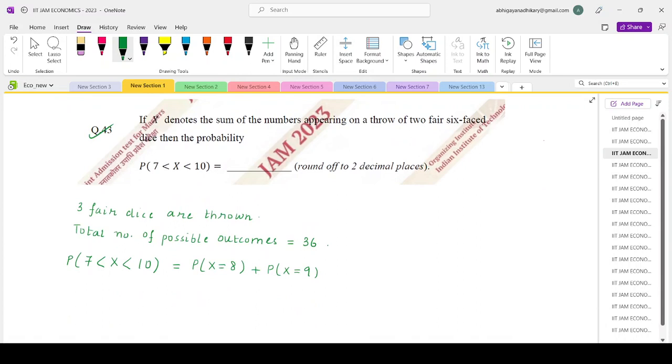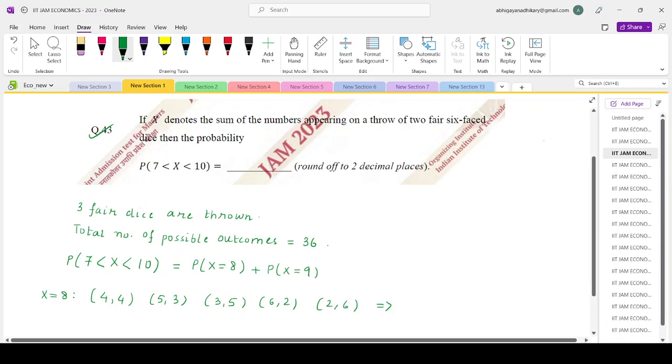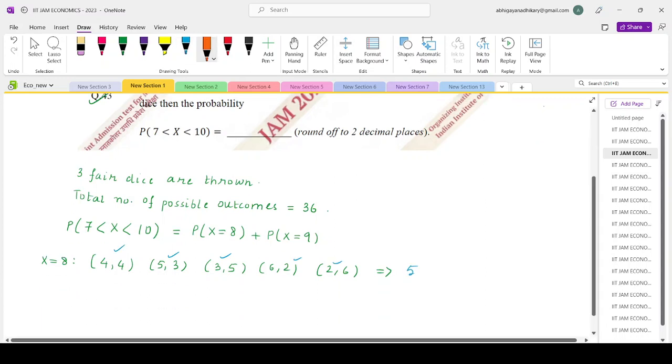If you look at the probability X equals 8, what are the possible combinations? The two dice must either throw (4,4), (5,3), (3,5), (6,2), or (2,6). Total possible outcomes: 5.